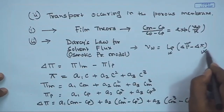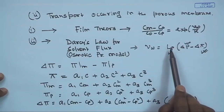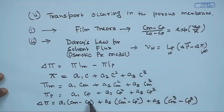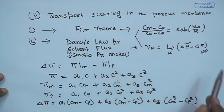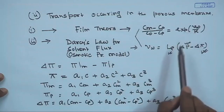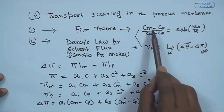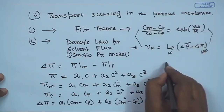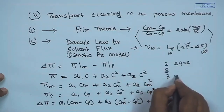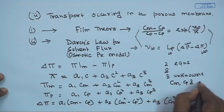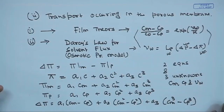Looking at the system of equations: the osmotic pressure model contains constant Lp, operating pressure ΔP, and osmotic pressure difference Δπ expressed in terms of cm and cp. We have two governing equations — one for solute flux in the mass transfer boundary layer and one for solvent flux through the membrane — but three unknowns: Vw, cm, and cp. In the next class we will invoke one more equation in order to solve this three-equation, three-unknown system.